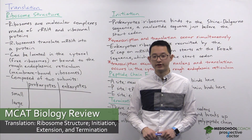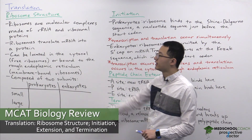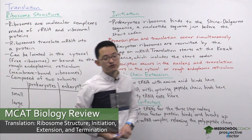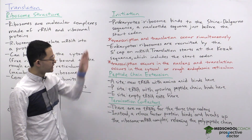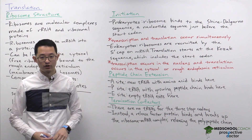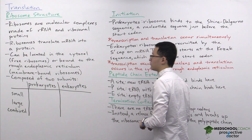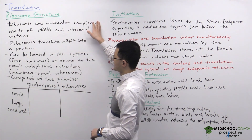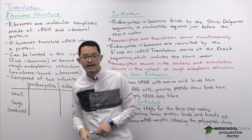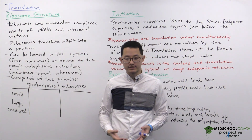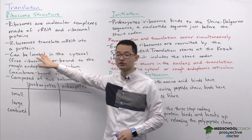In the next few videos we want to go over translation. This video is going to cover ribosomal structure as well as the process of translation, including initiation, extension, and termination. Ribosomes are molecular complexes made of ribosomal RNA and ribosomal proteins. These RNA protein complexes are responsible for translating mRNA into proteins.